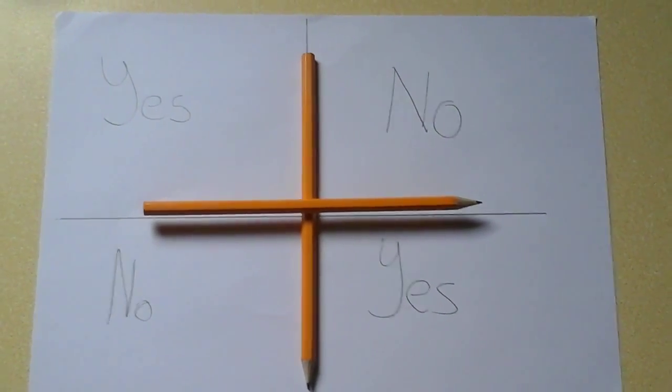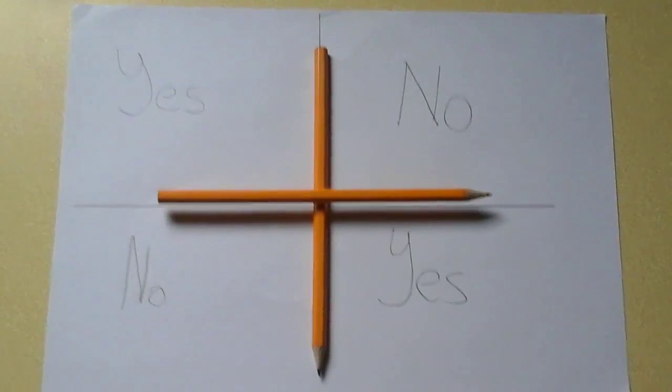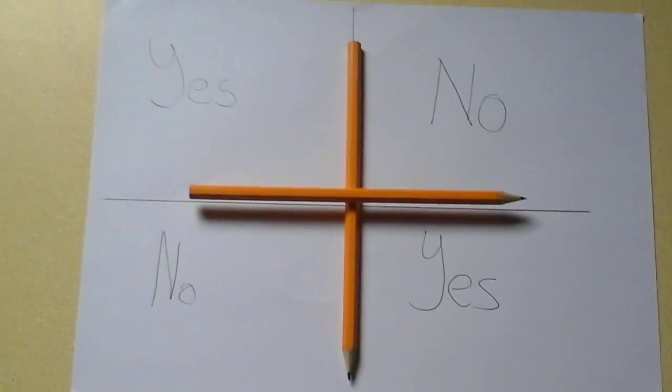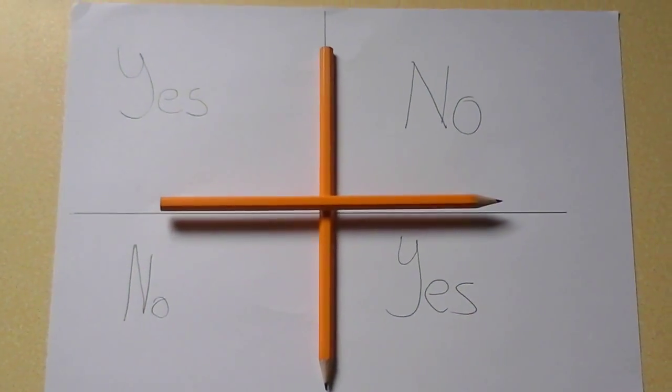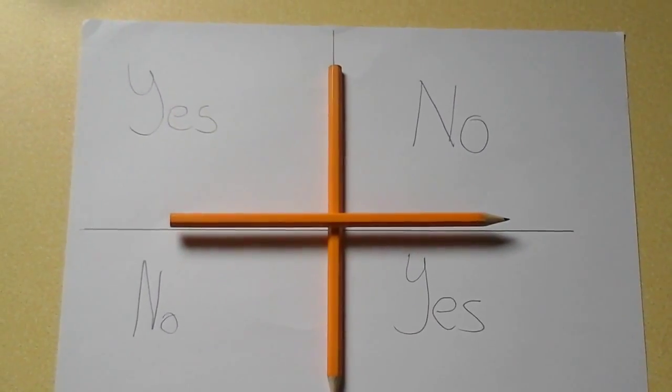Hi guys, Frazin here. As you can see I have a paper with yes and no twice and two pencils. That will probably mean we're going to do the Charlie Charlie challenge.